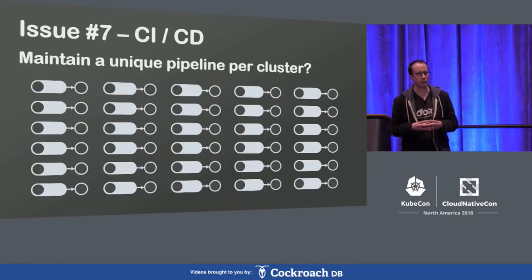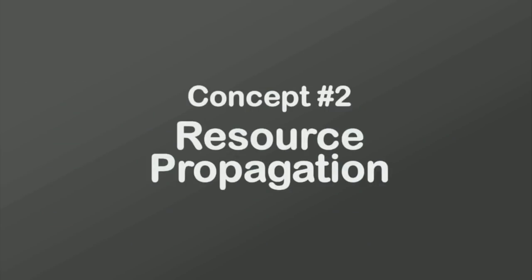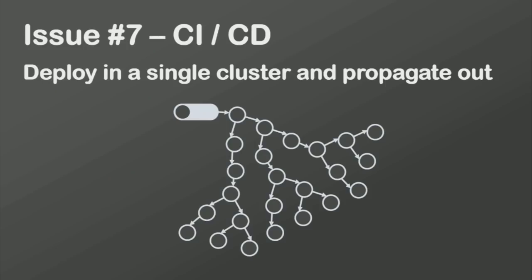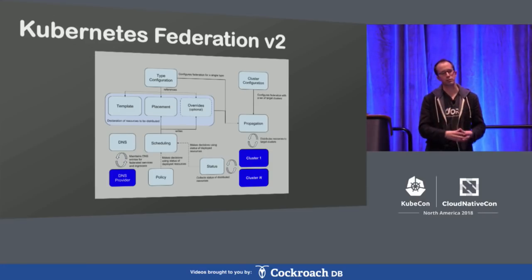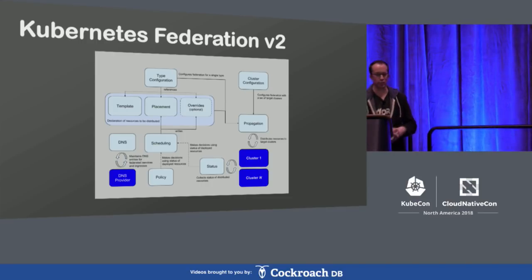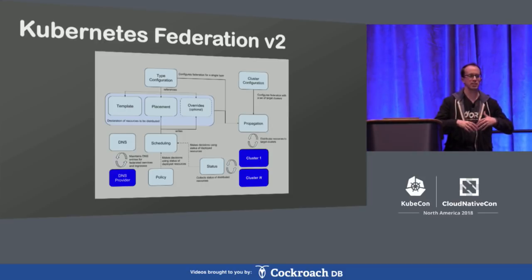New issues when we hit 100 clusters: CI/CD. You can maintain ten CI/CD pipeline deployments, but at 100, having a unique pipeline deploying to each cluster gets unwieldy. Consider the concept of resource propagation instead. Rather than going to each cluster and saying deploy, deploy, deploy, use resource propagation where you deploy to a single root cluster or two root clusters and allow the system to propagate out from there. Federation V2 — very different from V1 — has this concept of propagation built in where you can template resources and have them propagate through multiple clusters in your topology.